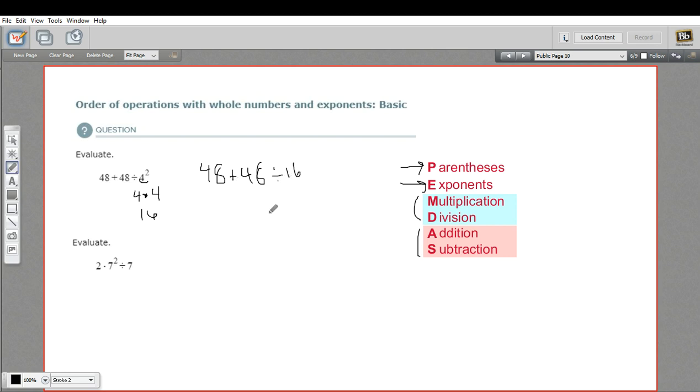Now we have addition and we have division. We need to do multiplication and division before we do addition and subtraction. So 48 divided by 16, if you're not sure, pull out your calculator. That is 3, I'm pretty sure. So this problem is 48 plus 3, and that is 51.